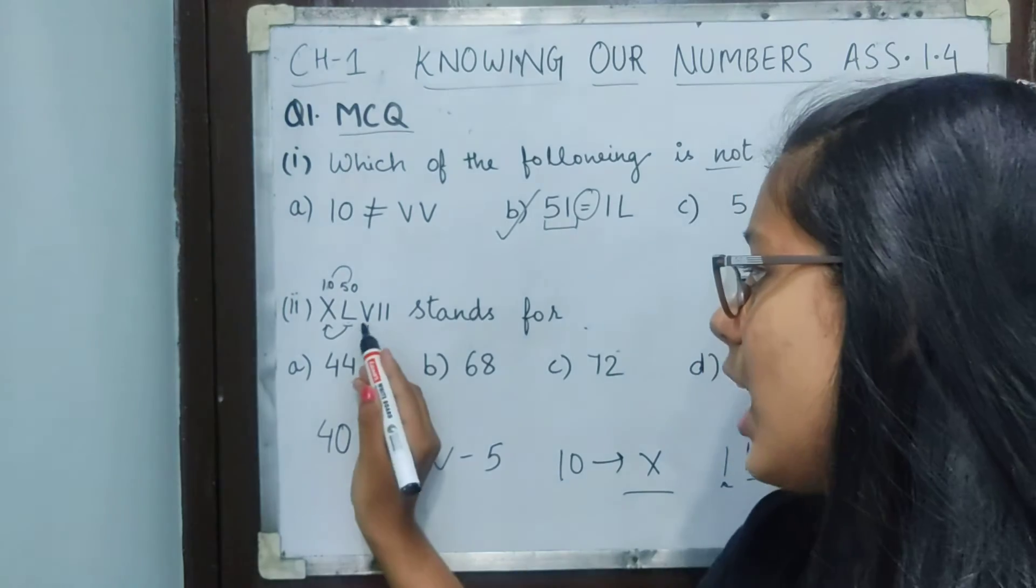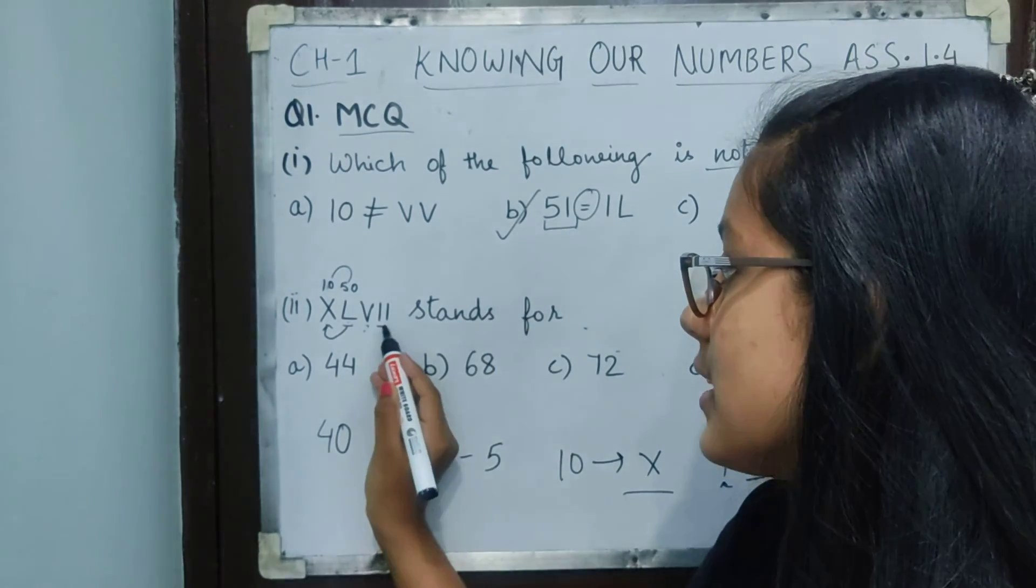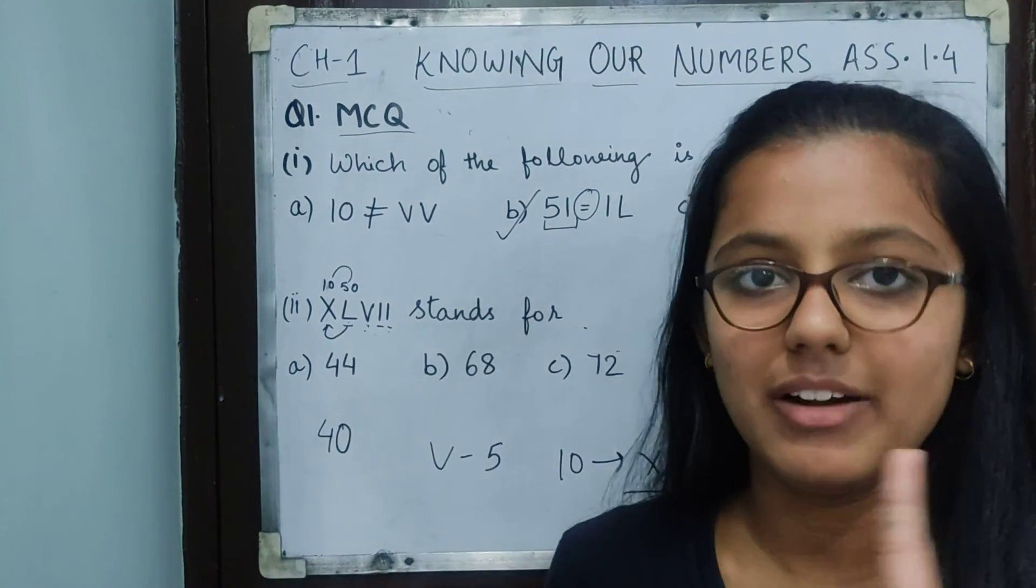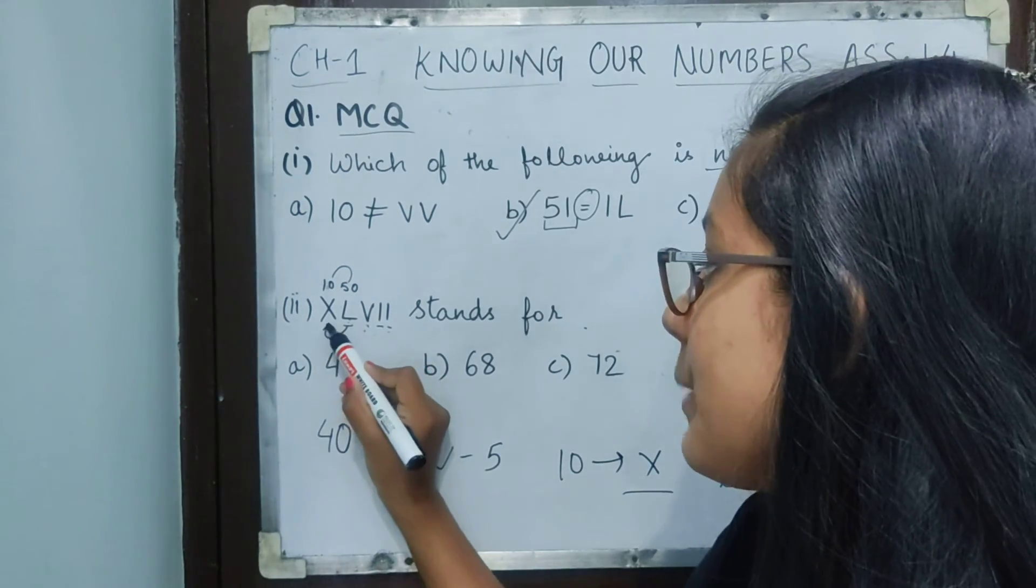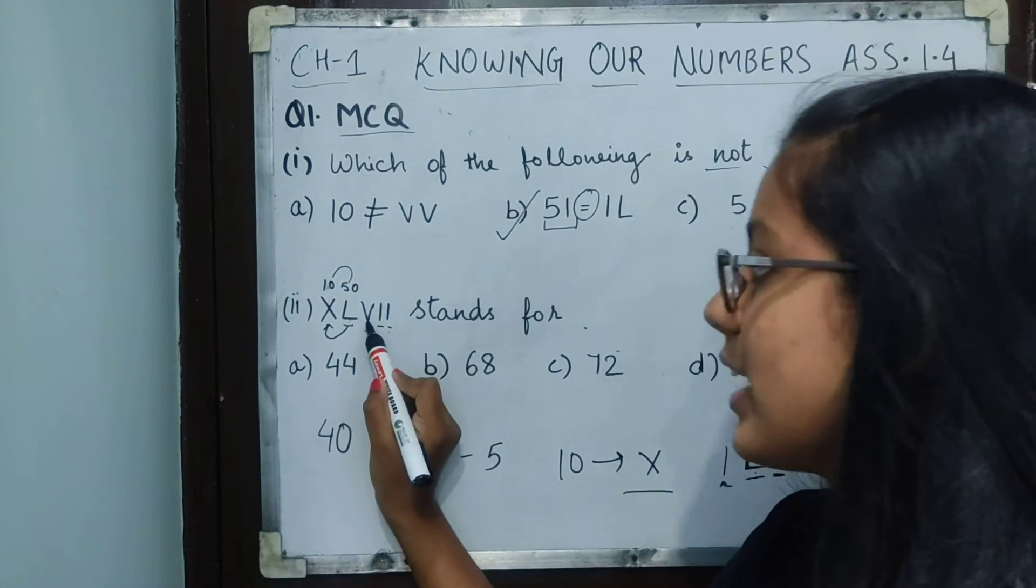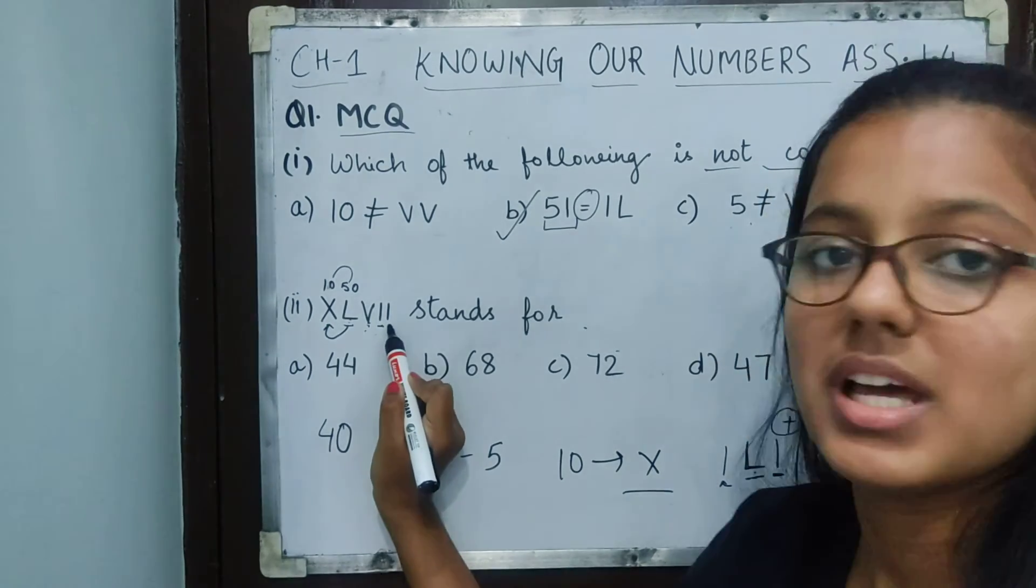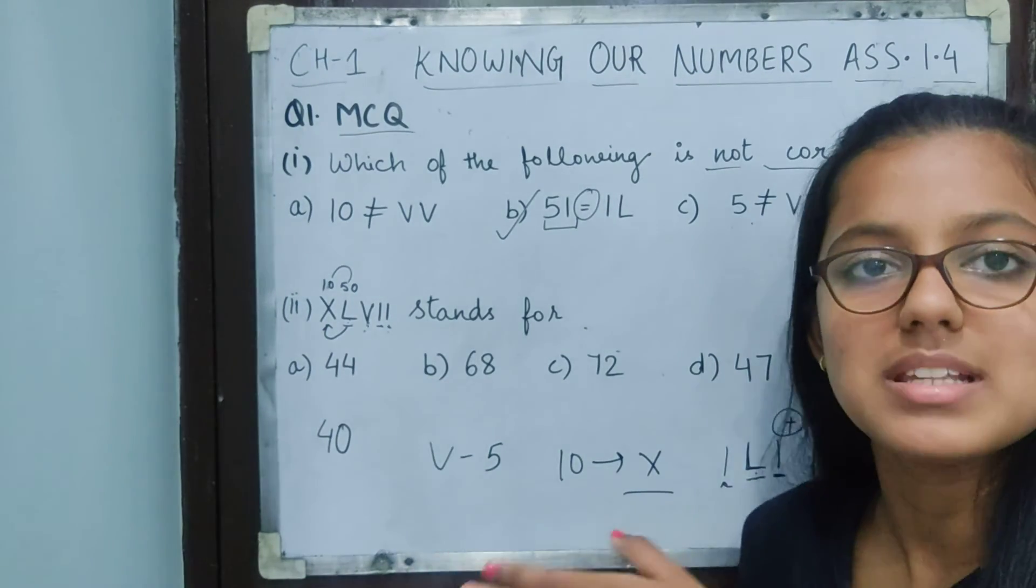That gives 45. Now on its right side, we have II, which is 1+1. So we have 50 minus 10, that is 40, plus 5 is 45, plus 1 plus 1, that is 47.